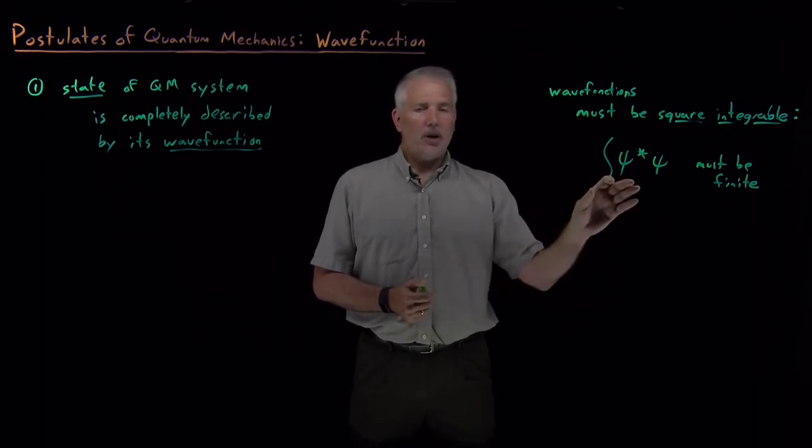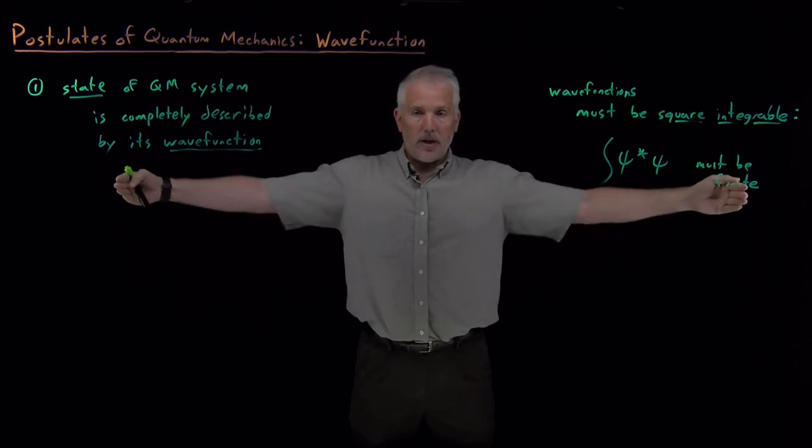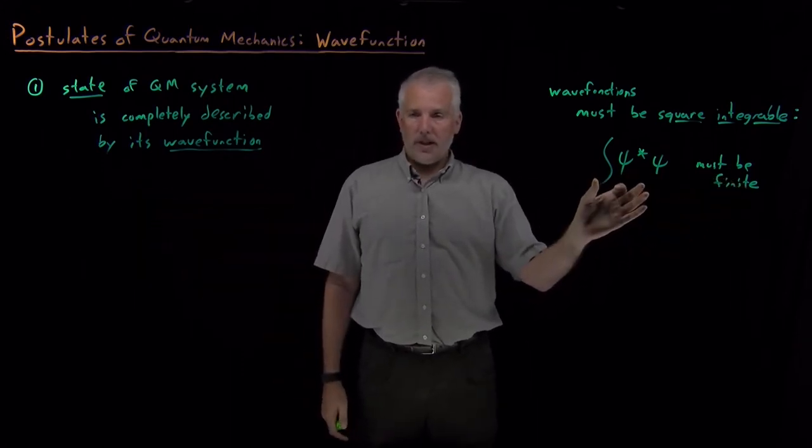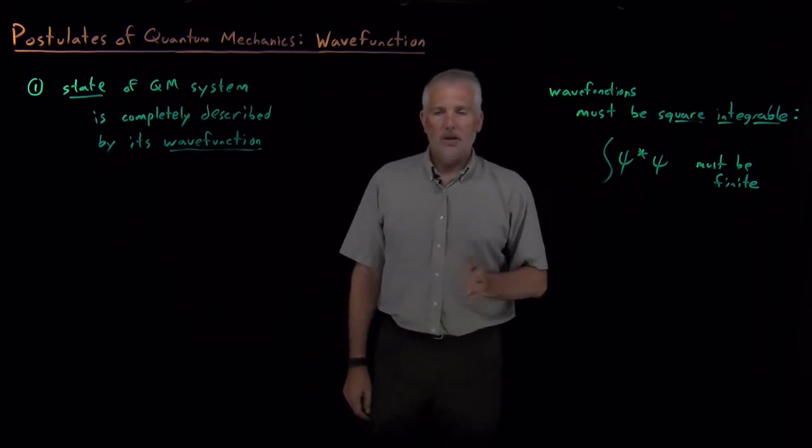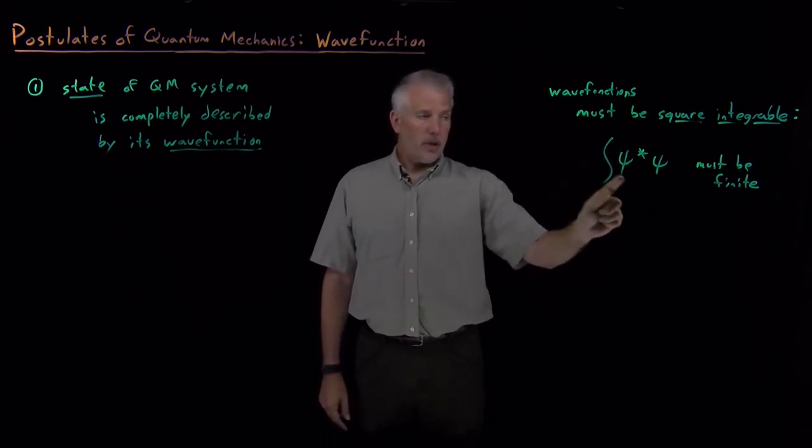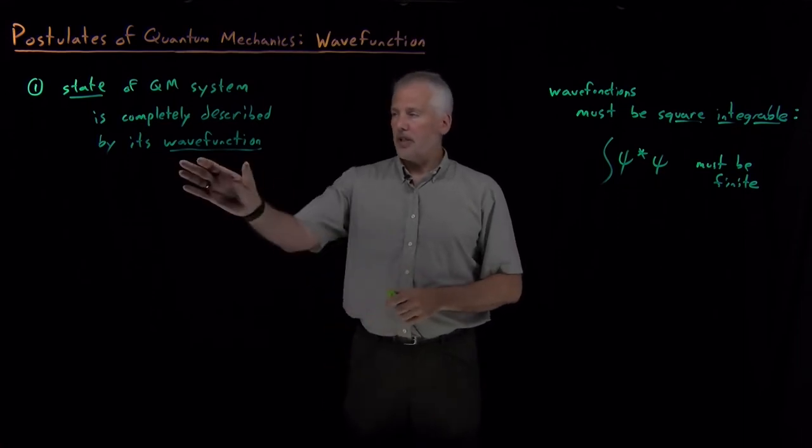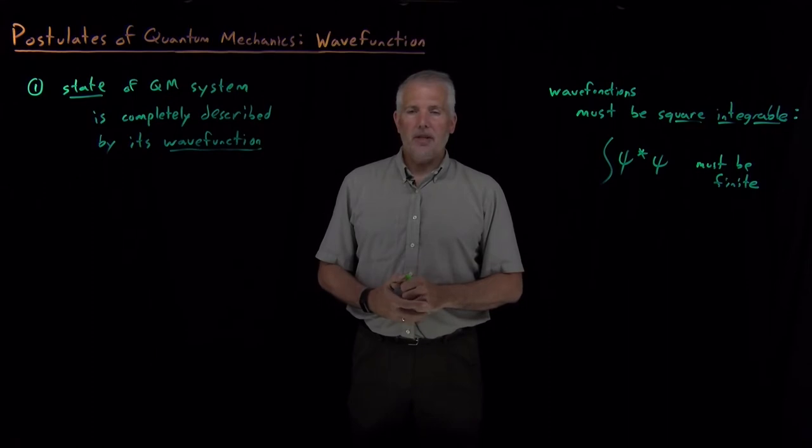Remember when we talked about the free particle, a sine wave that oscillated forever in all directions? The square of that wave function integrated gave an infinite answer. That's one reason we didn't like that wave function and had to start talking about particles confined to boxes, so that the integral of their probability or the square of the wave function would be finite. A wave function is what we've seen before, with the requirement that it be square integrable.